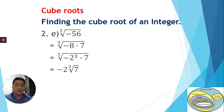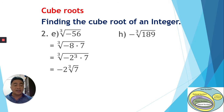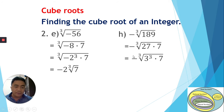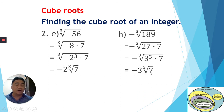Our last integer example: the negative cube root of 189. The factors of 189 are 27 times 7. For 27, we can write 3 to the power 3. So 7 stays inside the radical, and 3 is extracted out. We also have the negative sign waiting outside. Therefore, the answer is negative 3 times the cube root of 7.